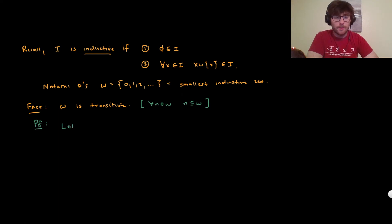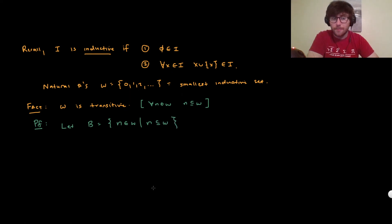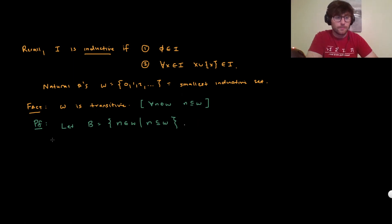How can we prove this? Let's call B the set of all natural numbers for which this statement is true — for which n is actually a subset of omega. The claim is going to be: let's show that B is actually inductive.